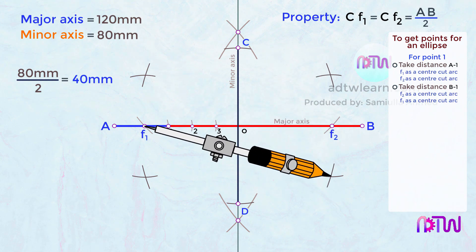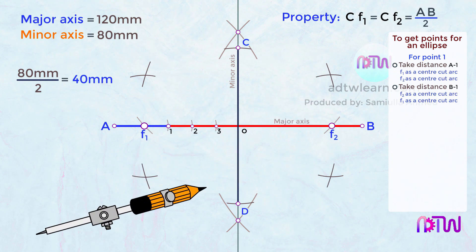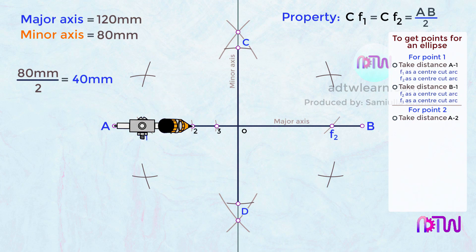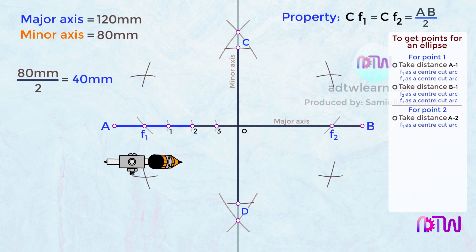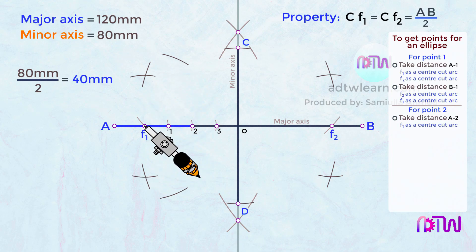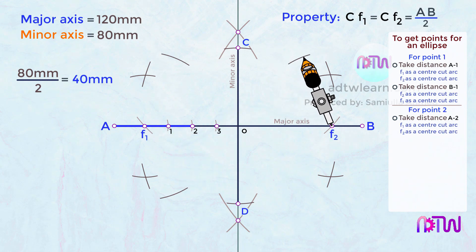Remember: while cutting arcs we always use F1 and F2 as the centers. Similarly, we do the same for the remaining points 2 and 3. Take the length between points A and 2 on the compass, and using F1 as the center, cut arcs on both sides. Using the same length, take F2 as the center and cut arcs on both sides.